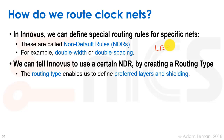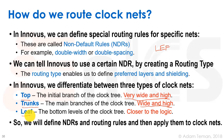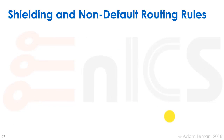We can tell Innovus to use a certain NDR by creating a routing type. A routing type enables us to define preferred layers and shielding. In Innovus, for clock nets there are three distinct types: top nets, which are the initial branches of the clock tree with over 10,000 sinks; trunk nets, which are the next level with high fan-out; and leaf nets, which are the bottom levels, closer to logic, routed at lower metal layers, possibly without shielding.